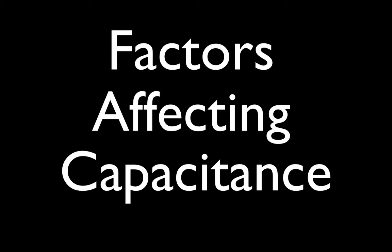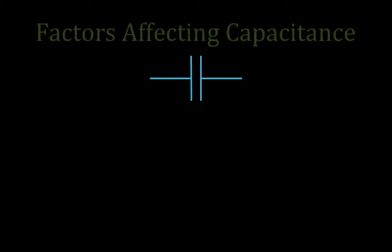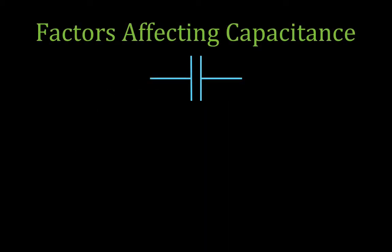In today's video I'm going to go over the factors affecting the capacitance of a capacitor. Now there are really three different things we can do, which I'm going to talk about just a moment. But this is the basic circuit symbol for a capacitor. These are the wires that lead up to the capacitor. These parallel lines represent the parallel plates of the capacitor. Sometimes you'll see one is curved, but more generally it's these two parallel lines.